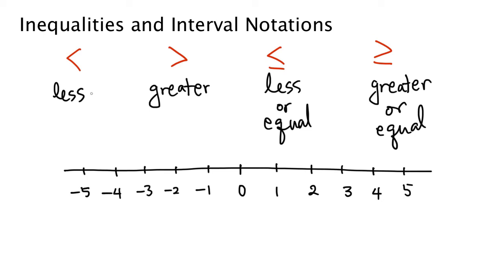In this video, I'm going to explain inequalities and interval notations. There are four different types of inequality symbols: less than, greater than, less than or equal to, and greater than or equal to. For example, we have 2 less than 3, 5 greater than 1, and we could also use variables like x less than or equal to 2.